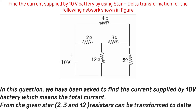In this video we will discuss some problems on DC circuits. Find the current supplied by a 10 volt battery by using star to delta transformation for the following network. In this question we are asked to find the current supplied by the 10 volt battery, which means the total current flowing through the circuit.